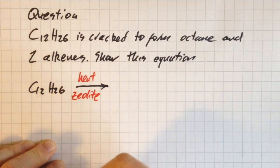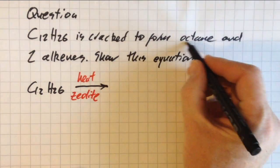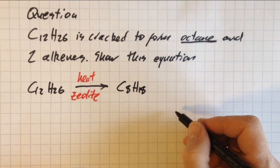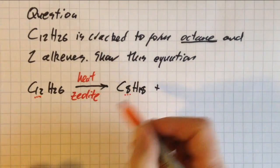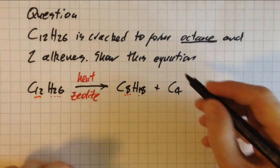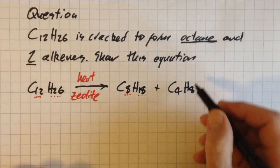Okay, octane is CnH2n+2 where n is 8. So what are those alkenes then? I've got four carbons and I've got eight hydrogens left, but it can't be that. I need two of them.